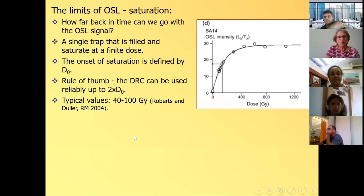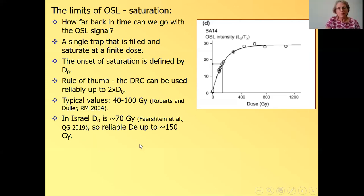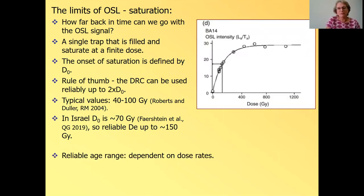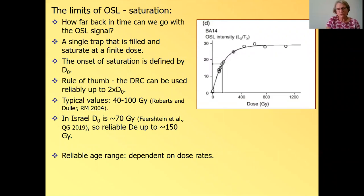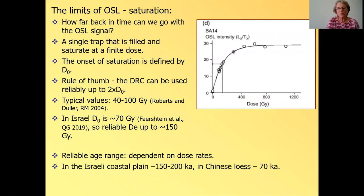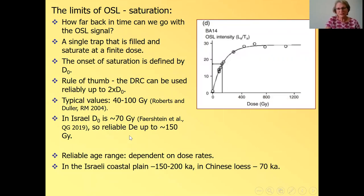And the rule of thumb is that the dose response curve can be useful up to twice this D0. This D naught, you can imagine it as when the dose response curve stops growing linearly and starts curving. So this is just a visual way to look at it. And typical values of this D naught is between 40 and 100 gray. So in Israel, this D naught is 70 gray, and it's been measured on many samples and published by Gala Feirstein, my former PhD student. So if it's 70 gray, the 2D naught in Israel will be in the quartz typical in Israel, will be up to about 150 gray. And that is the limit of getting reliable ages. Anything beyond it will be underestimated. So what kind of ages can we get with 150 grays? It will depend on the dose rate.